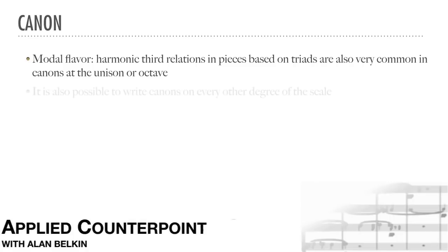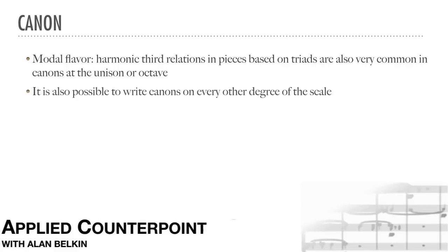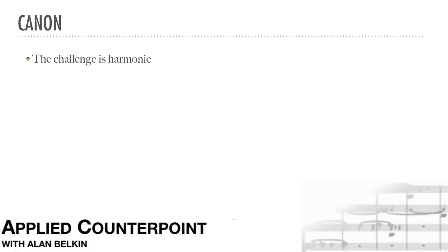Apart from canon at the unison or the octave, it's also possible to write canons on every other degree of the scale. Here the following part will differ in interval quality according to the mode or scale being used. Imitation with the intervals maintained exactly, semitone for semitone, would force the canon to modulate all the time, moving very quickly into remote tonal regions. Here again the challenge is usually harmonic: how to make the imitation on another scale degree make harmonic sense? This is why so many of these canons have added free parts.